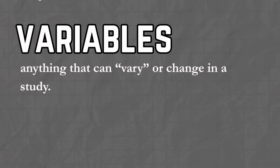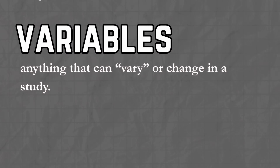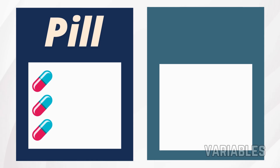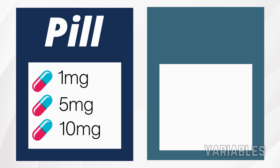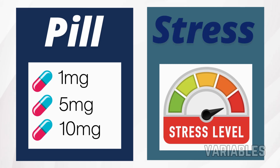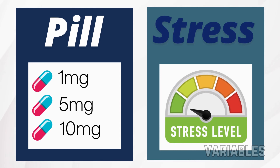First up: variables. A variable is anything that can vary or change in a study. For example, Anti-Stress 9000, the pill, is a variable because the amount given to participants can vary — one milligram, five milligrams, ten milligrams, and so on. Stress is also a variable because it can increase or decrease as a result of taking the pill, from high stress to low stress.